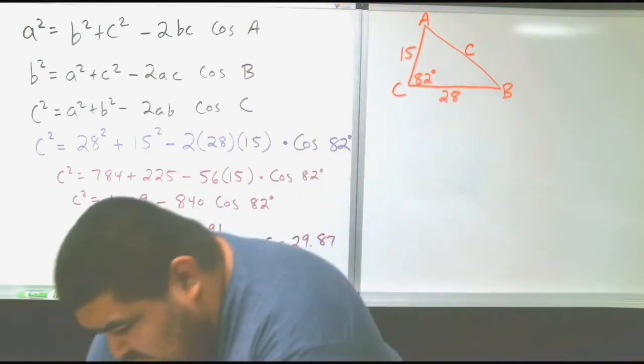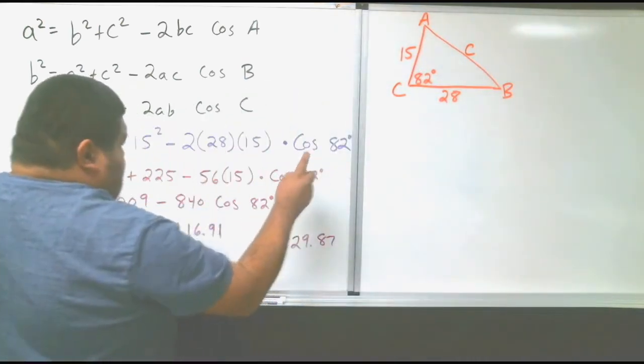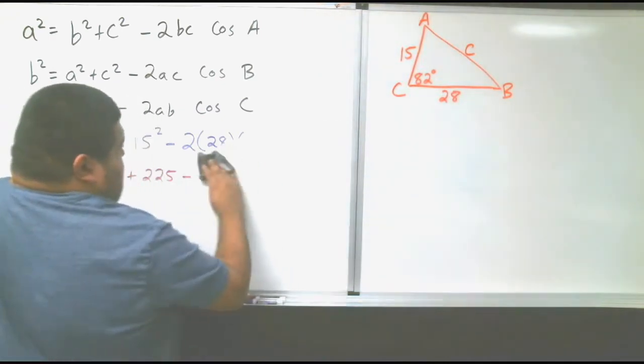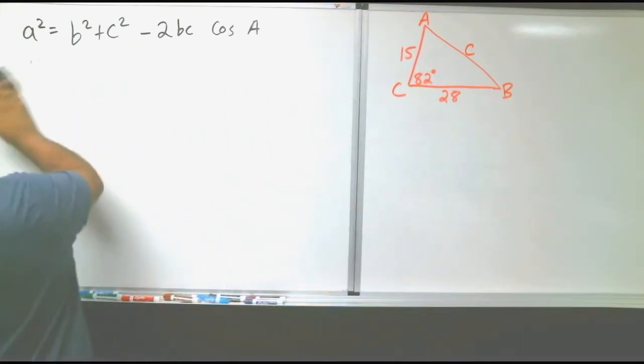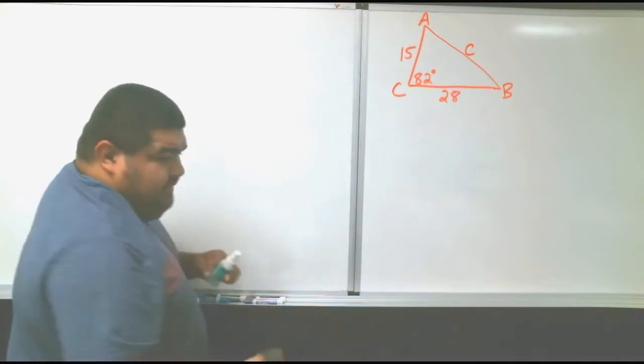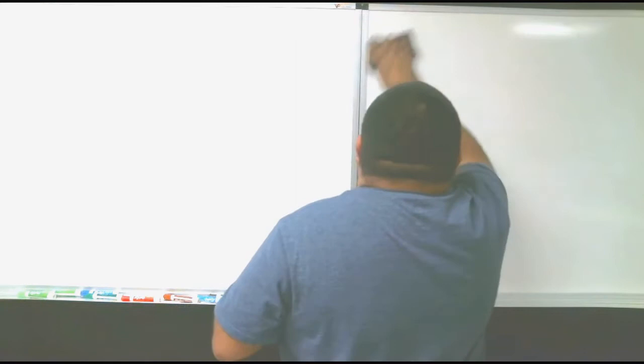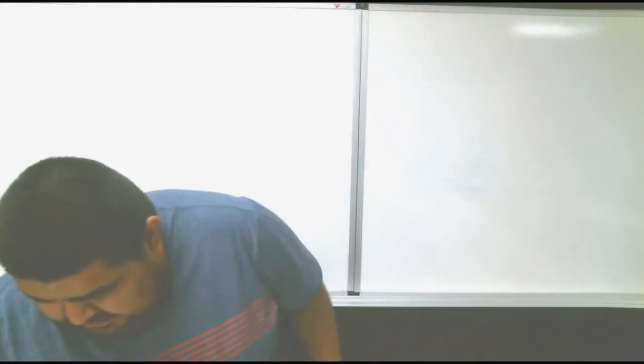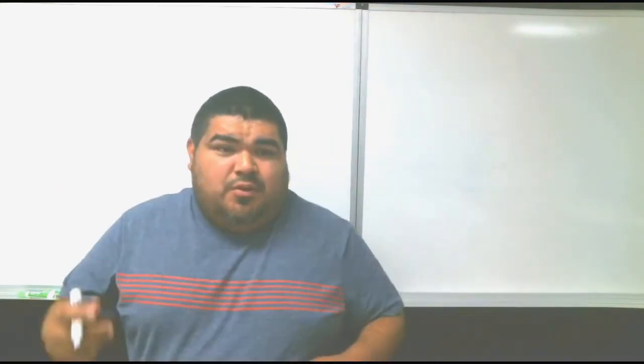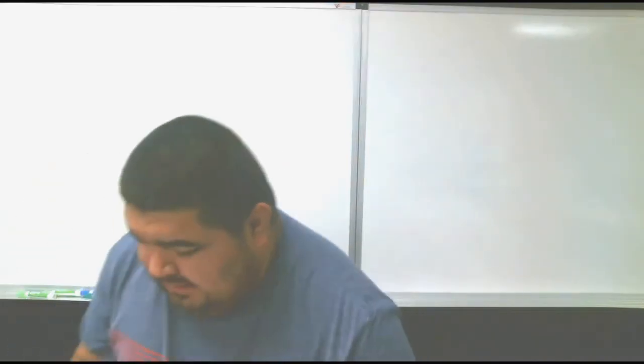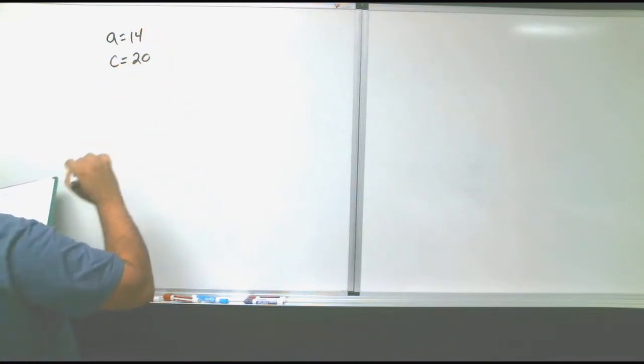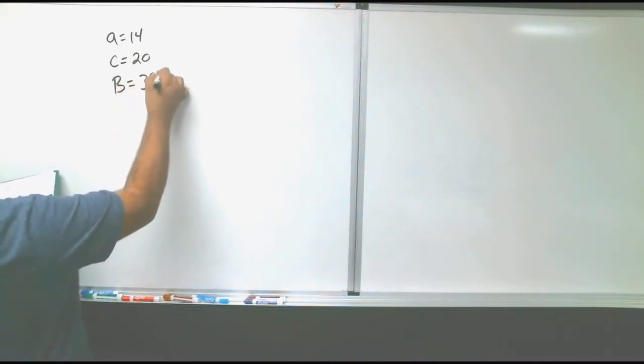All right guys. So here's your assignment for today. It's kind of easy. It's just a little lengthy. So all you have to do is plug it in and solve for like a normal problem. Probably the hardest part is choosing the equation you need to use. So here's the ones for you. I'm not actually going to draw the whole triangle. I'm only going to give you the pieces. So here we go. We have little a equals 14, little c equals 20, capital B equals 38 degrees. That's number one.